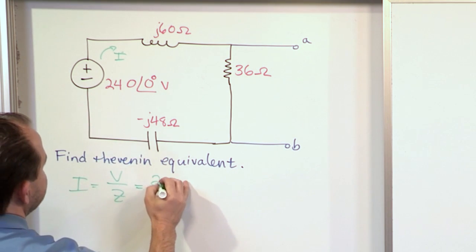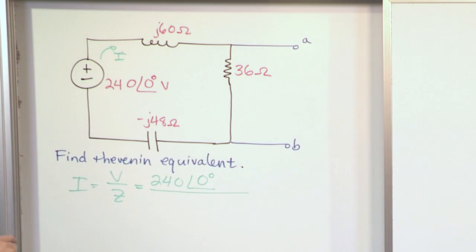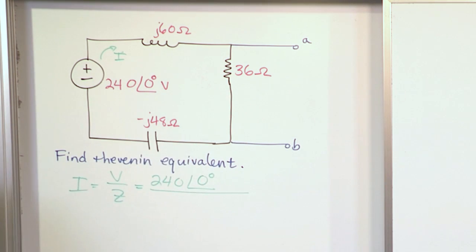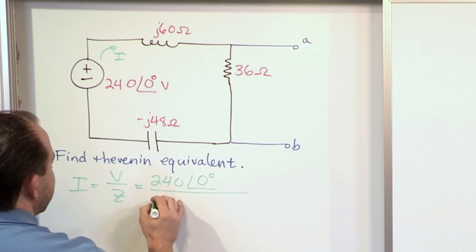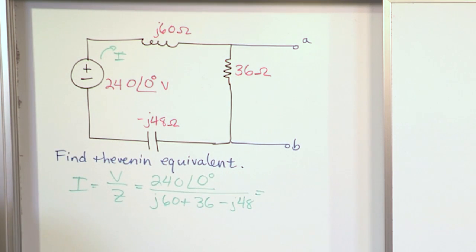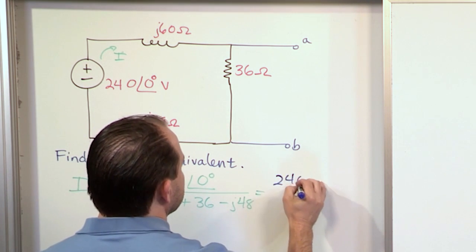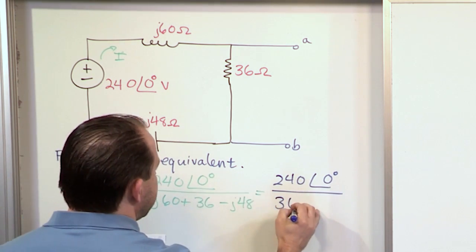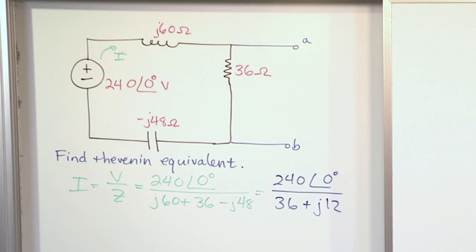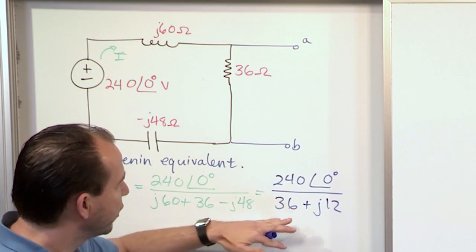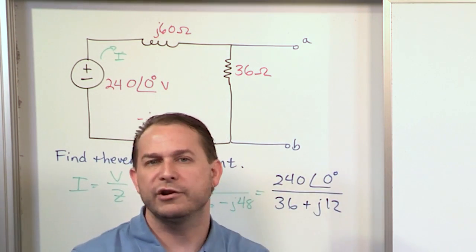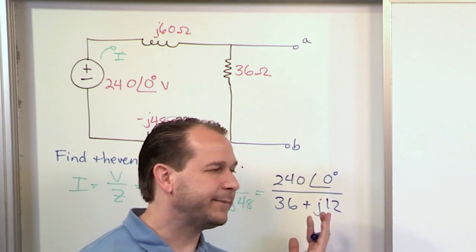The voltage is given in the problem statement: 240 at an angle of zero degrees. The impedance is the total impedance in this loop — the sum of all three impedances: j60 plus 36 minus j48. So you'll have 240∠0° on top, and on the bottom the real part is 36 and the imaginaries add together: 60 minus 48 gives you plus j12. You can do this manually by converting to polar and dividing, or use your calculator — stick the numerator in as a polar number and the denominator as a rectangular number to avoid errors with complex arithmetic.